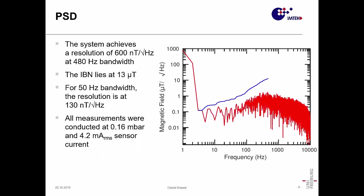To the measurement results, here you see a power spectral density plot. In red, you have the power spectral density of the output signal. It's given in magnetic field directly, microteslar per square root hertz. The blue line indicates the in-band noise. The system achieves a resolution of 600 nanotesla per square root hertz at 480 hertz bandwidth, and the in-band noise lies at 13 microteslar.